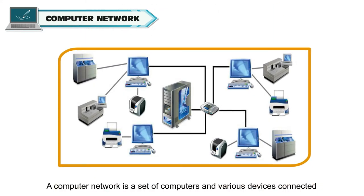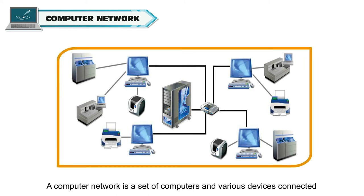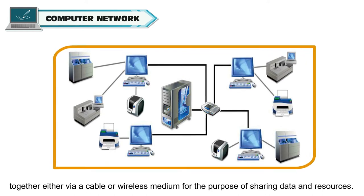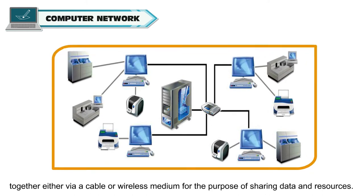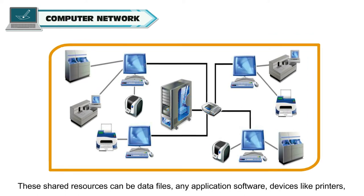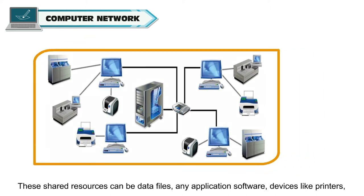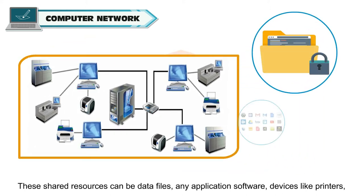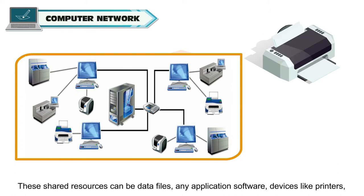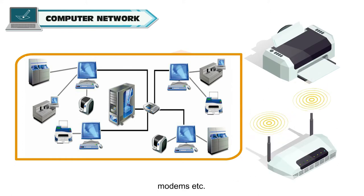A computer network is a set of computers and various devices connected together either via a cable or wireless medium for the purpose of sharing data and resources. These shared resources can be data files, any application software, devices like printers, modems, etc.